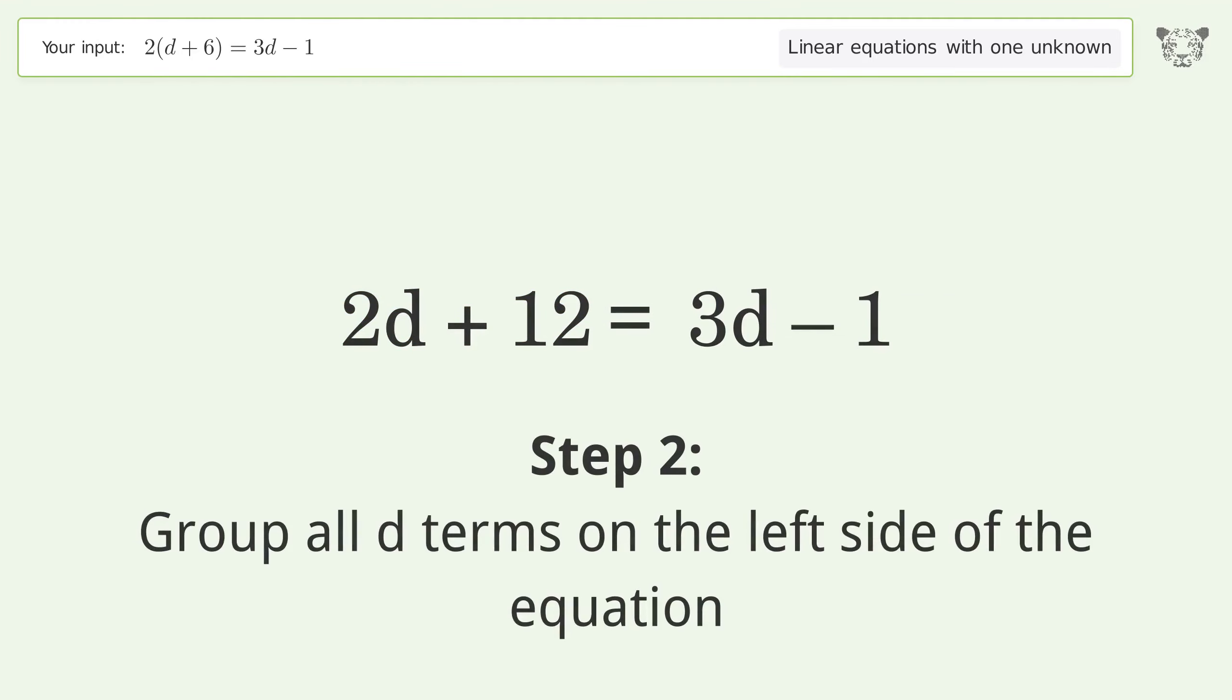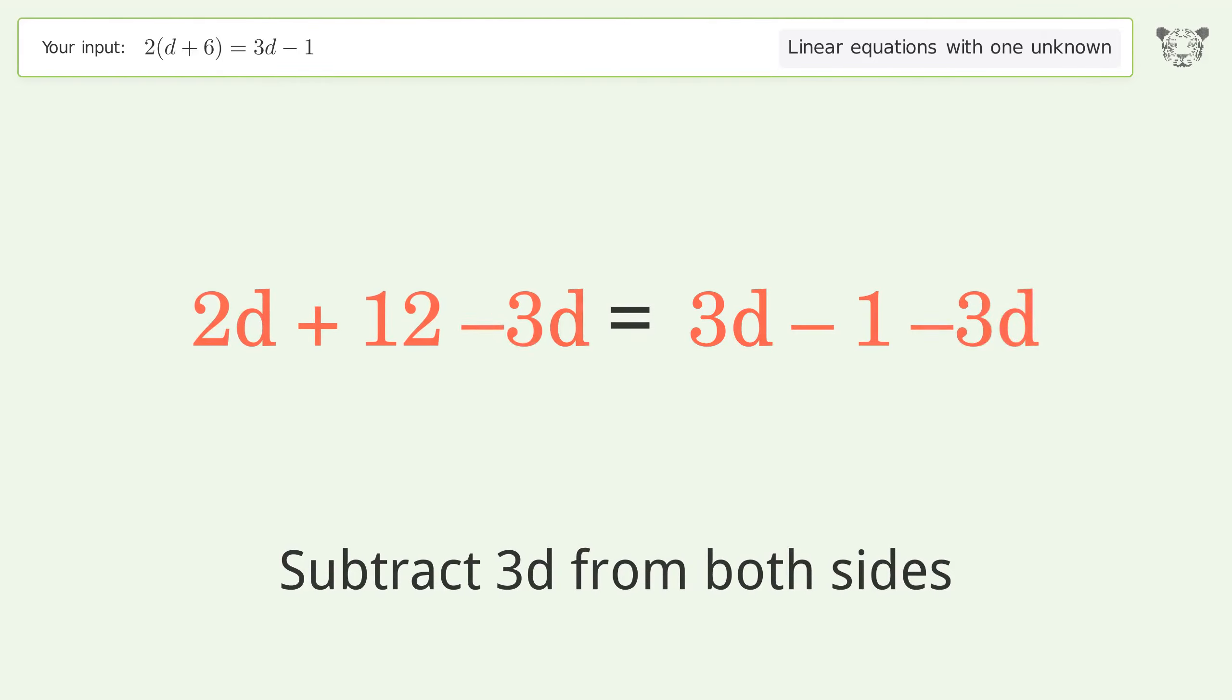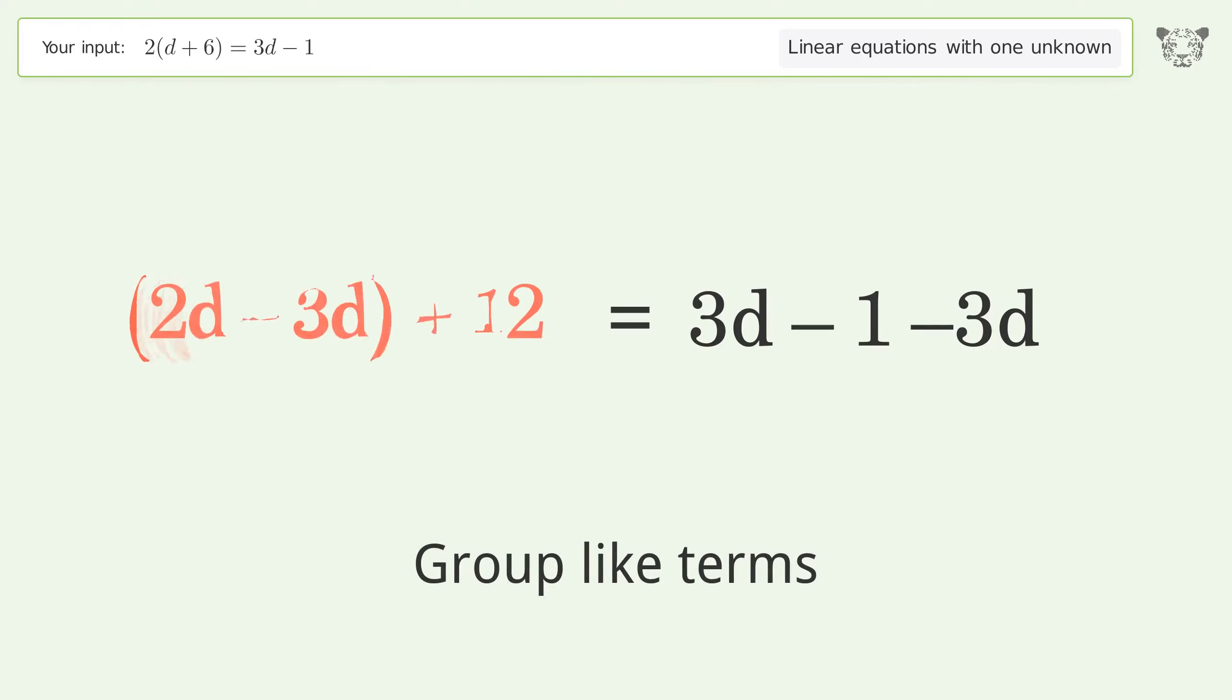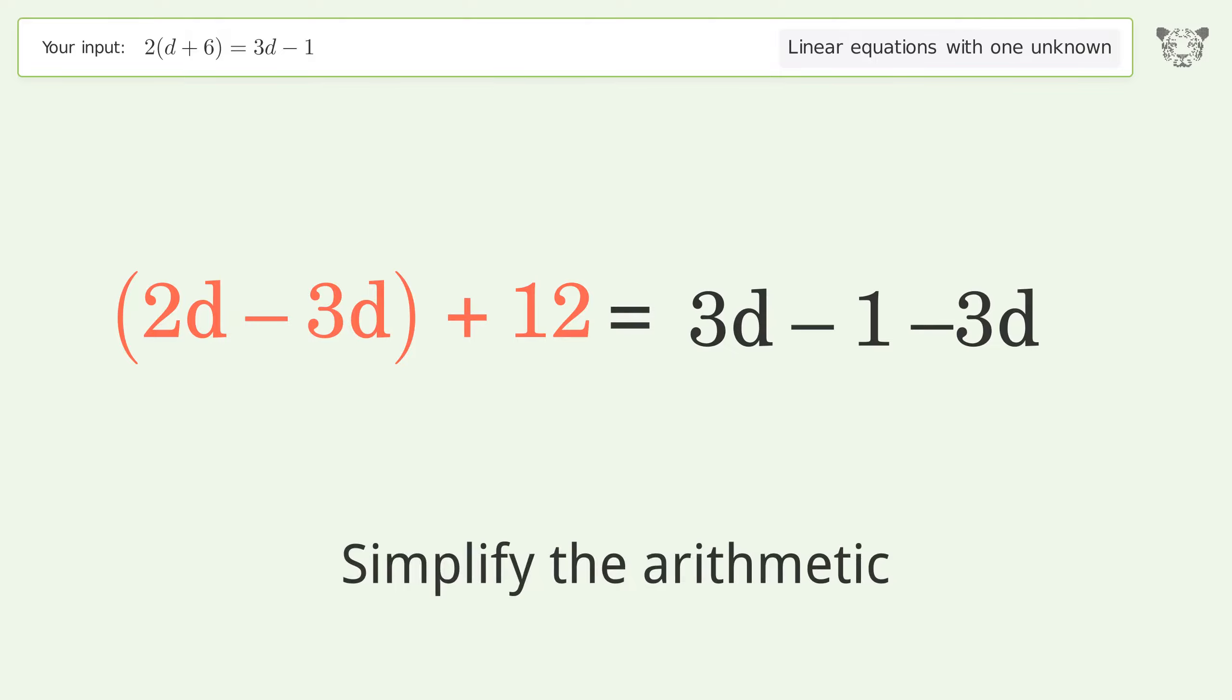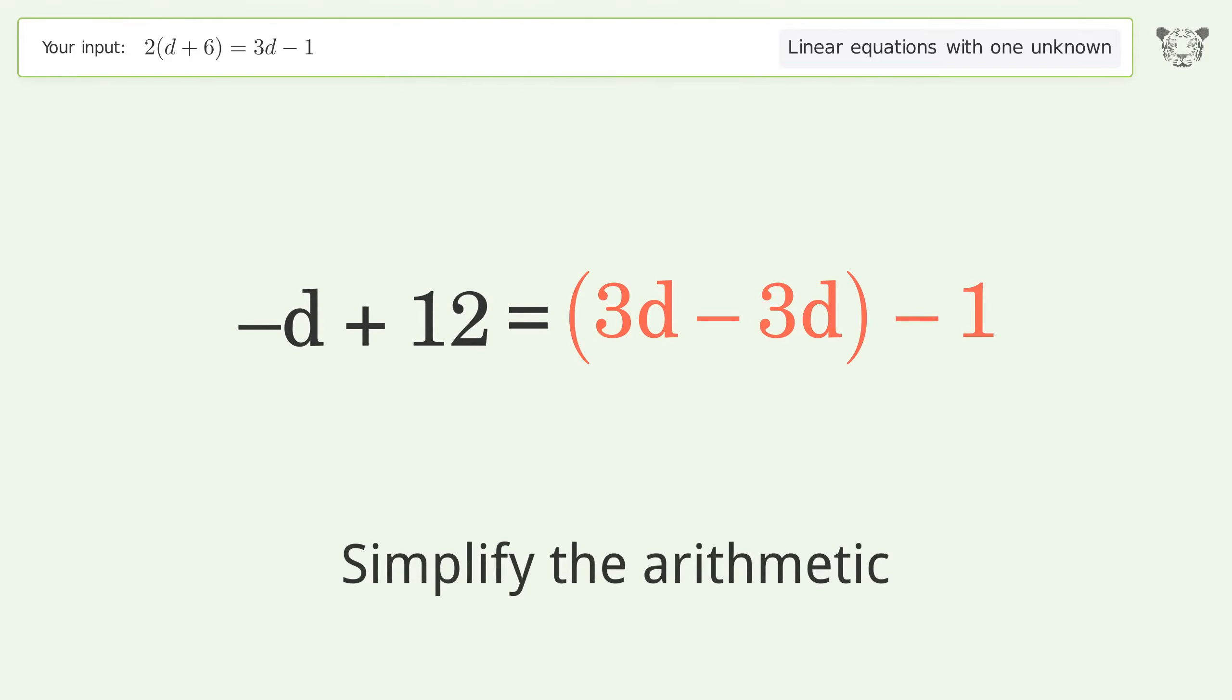Group all d terms on the left side of the equation. Subtract 3d from both sides. Group like terms. Simplify the arithmetic. Group like terms. Simplify the arithmetic.